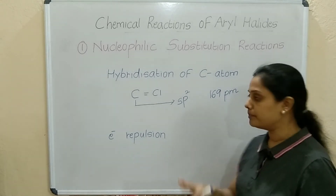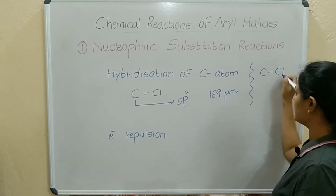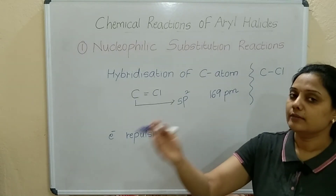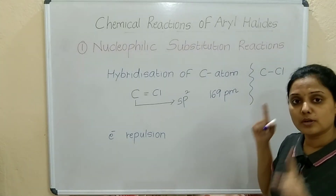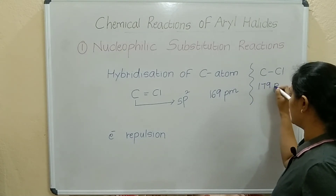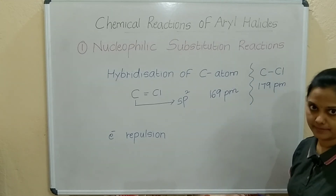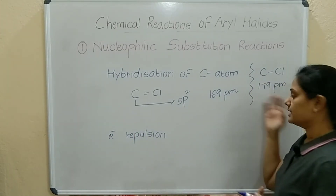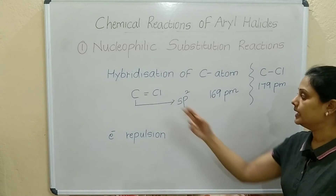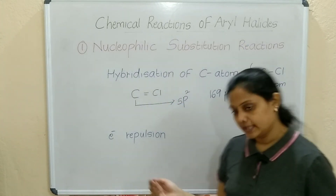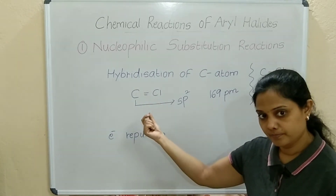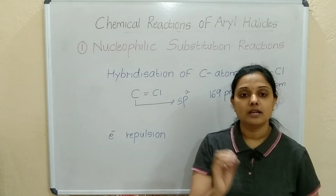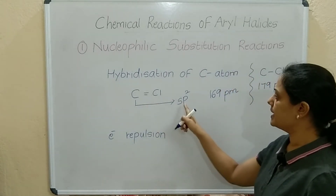For comparison, in alkyl halides with a single C–Cl bond, the bond order is only one, so the bond length is more — 179 picometers. With a double bond, bond order is two, so the bond length is smaller at 169 picometers. The smaller the bond, the stronger the bond. So the carbon in the benzene ring attached to chlorine is sp2 hybridized.